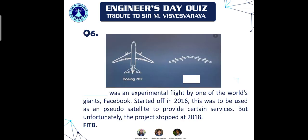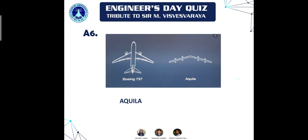Question six: what was the name of the experimental solar-powered drone flight by Facebook, which started in 2016? The answer is Aquila — Facebook's experimental solar-powered aircraft project.